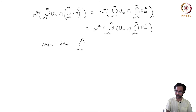For the third claim, if E is open, then E is Lebesgue measurable. This is trivially true because we can take U to be E itself, so that U minus E is the empty set and M*(U minus E) = 0, which is less than any positive epsilon. Therefore, if E is open, then E is Lebesgue measurable.